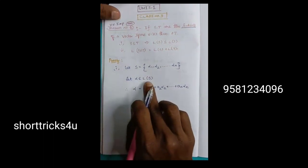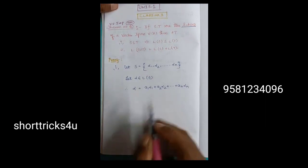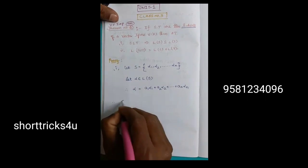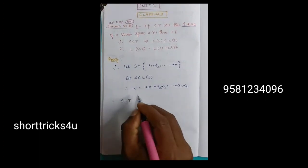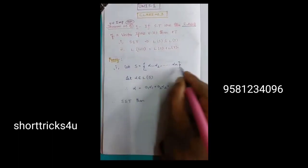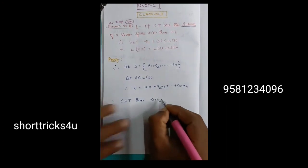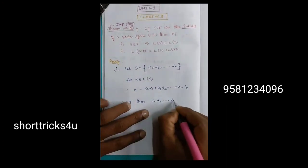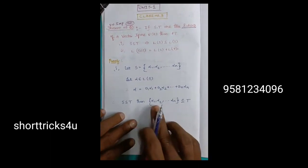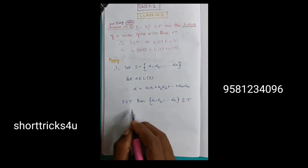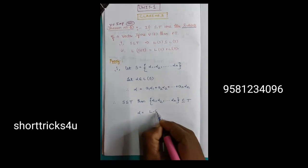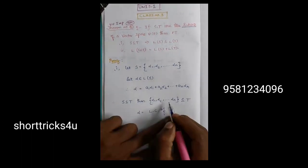What is the linear span? Linear span means linear combination. S is contained in T. What is S value? Alpha1, Alpha2, so on, are obviously contained in T. Alpha is equal to a linear combination of a finite subset of T.